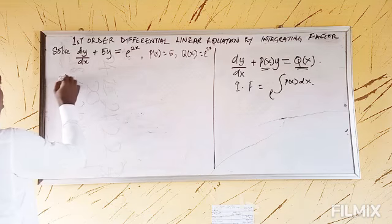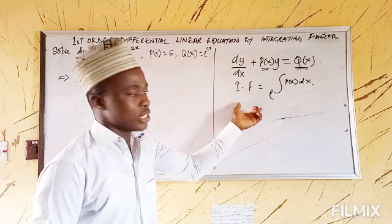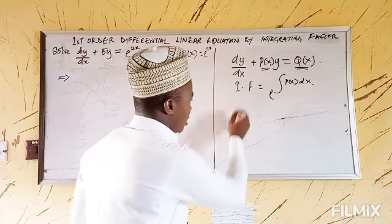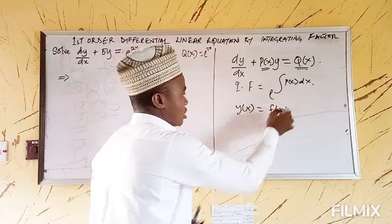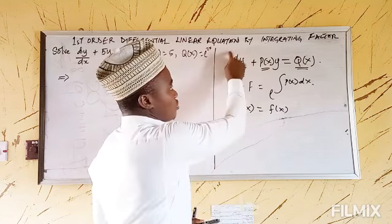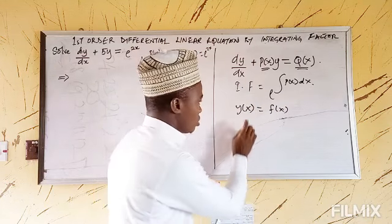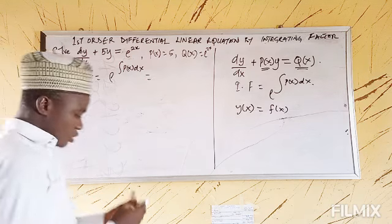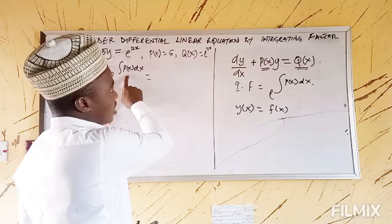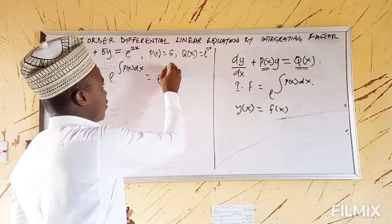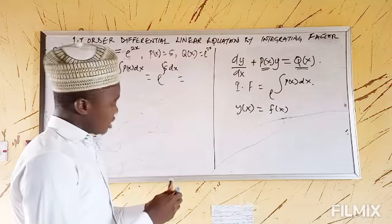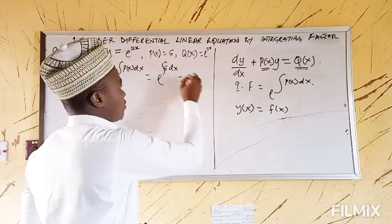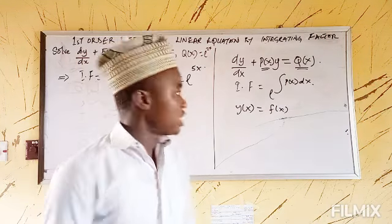To solve this equation, we need to get the integrating factor first. After that, we use it to multiply through the equation, then integrate to get our solution y equals f(x). We have IF equal to e to the power of ∫P(x)dx. Since P(x) is already given as 5, we have e to the power ∫5dx. The integral of 5dx gives us 5x. Therefore, we have e to the power 5x — that is my integrating factor.